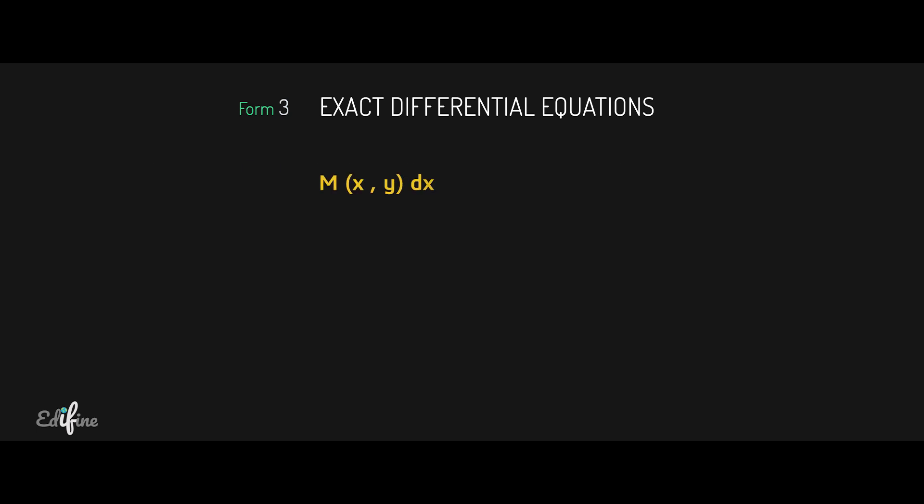The general form of an exact differential equation is of the form M(x,y) dx + N(x,y) dy = 0, or simply M dx + N dy = 0, where M and N are functions of x and y.